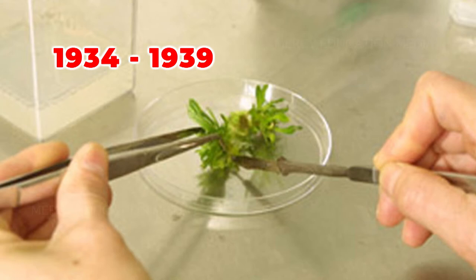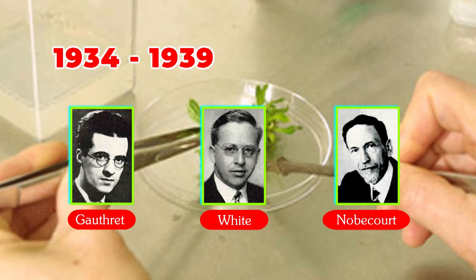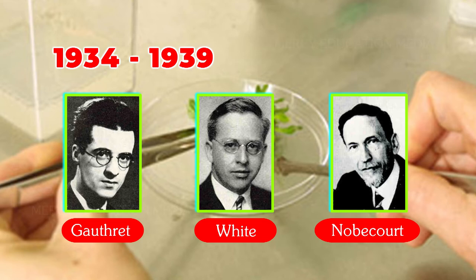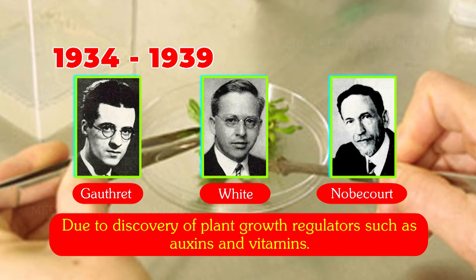But only during 1934 to 1939, a foundation of plant tissue culture was laid by three scientists due to the discovery of plant growth regulators such as auxins and vitamins.